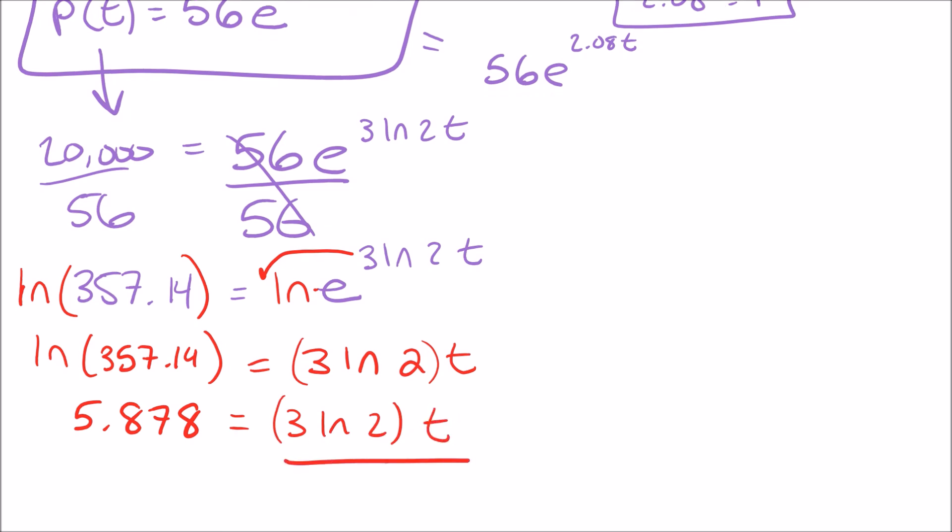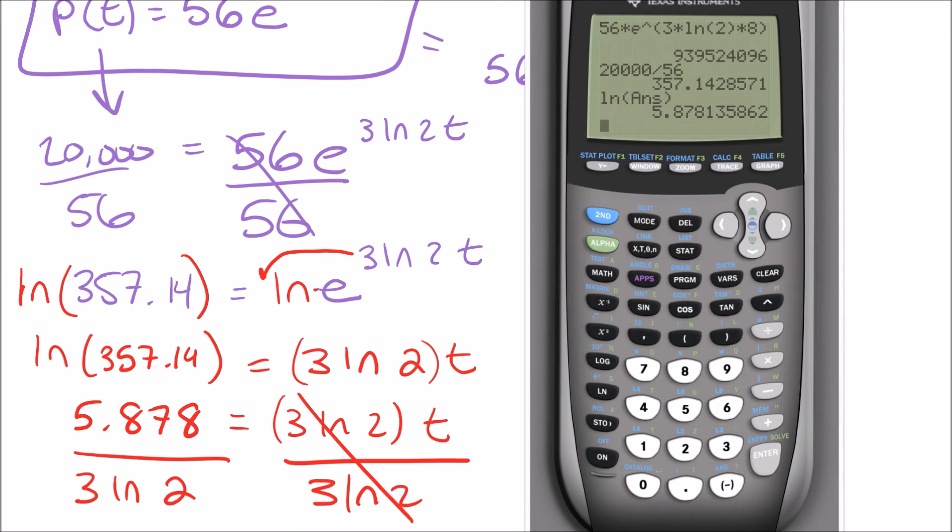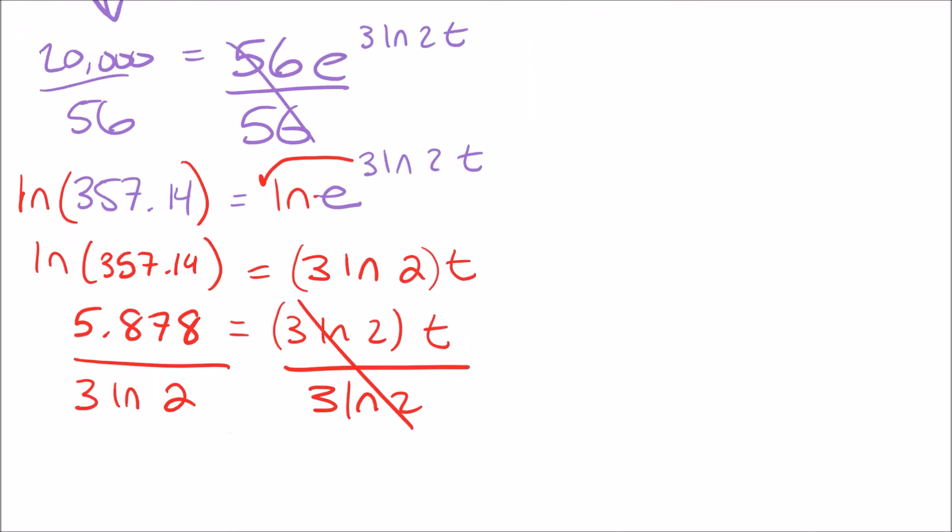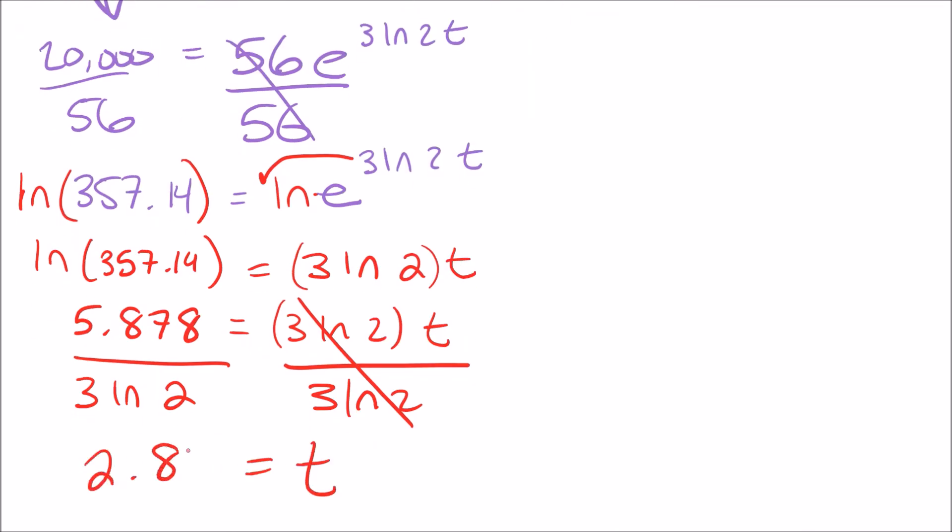And then to get the t by itself, I would divide by 3 ln of 2. So we're going to take that whole number, that answer there, and I'm going to divide it by 3 times the ln of 2. And that comes out to be about 2.86 something something. So it says round your answer to the nearest two decimal places, so I'd say 2.83. So this answer would be t is 2.83. All right, hope that helps.